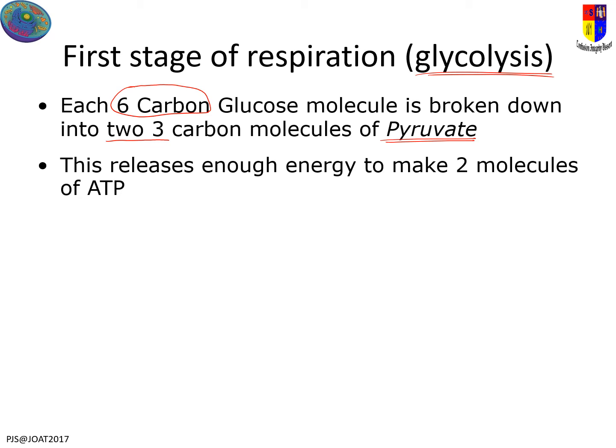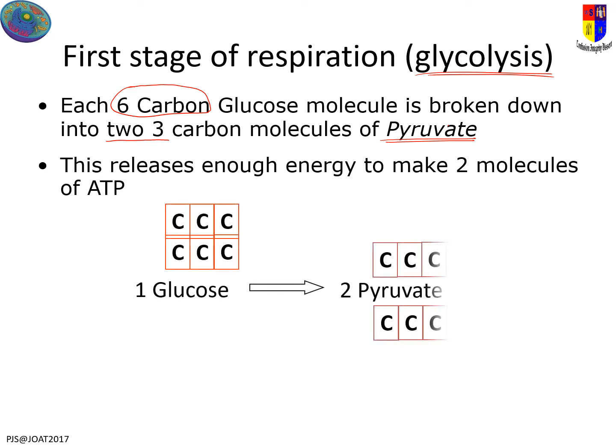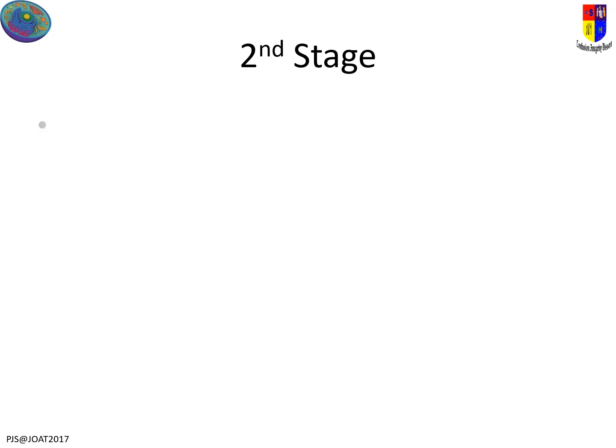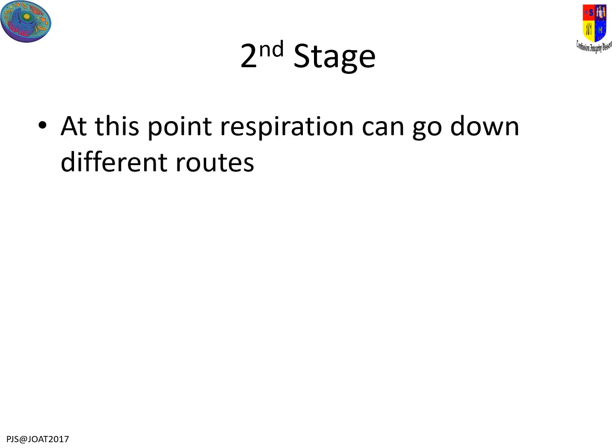That splitting gets you enough energy to produce two molecules of ATP. So we start with our six-carbon glucose, split it into threes, and get enough energy generated to make our two ATPs. There's not a lot of energy from that first stage, and this first stage is taking place in the cytoplasm.